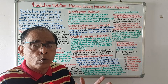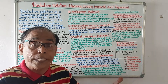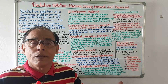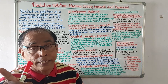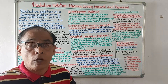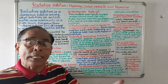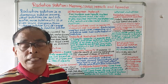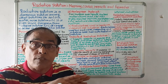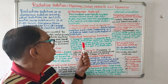Somatic impact means whenever there will be radiation pollution, people of an area will be affected — but it will not affect them hereditarily. It will lead to loss of weight, loss of appetite, vomiting, and diarrhea. This is known as somatic impact.